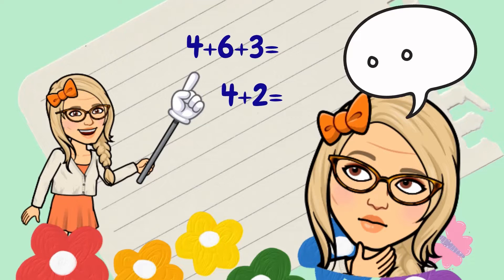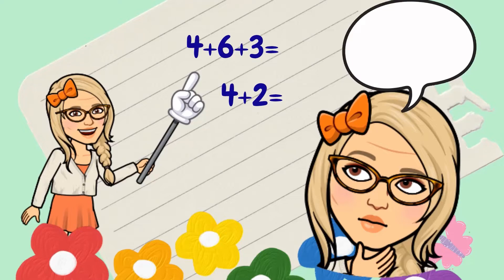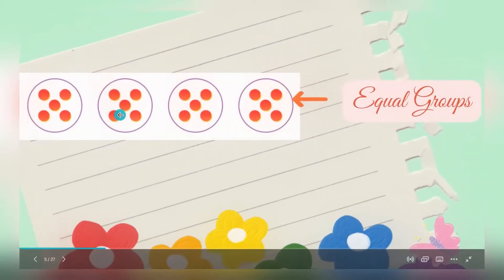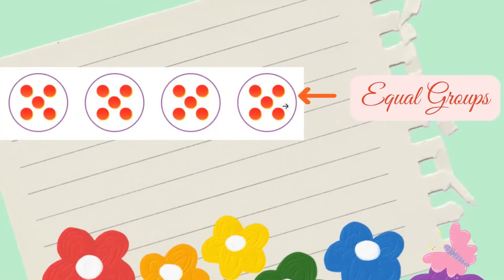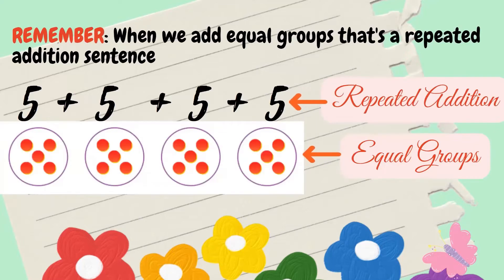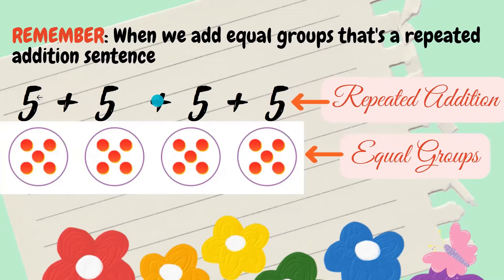But how is multiplication related with addition? How is it different? Let's think about it. In equal groups, we counted equal amounts to find a total amount. When I have equal groups, I'm adding equal amounts, right? This is exactly what happens when I have equal groups — my equal group gave me this repeated addition sentence: 5 plus 5 plus 5 plus 5. Equal groups are related with a repeated addition sentence. We add equal amounts.